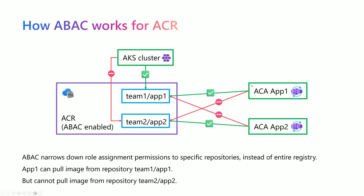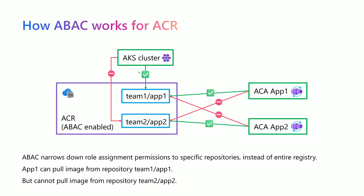So with ABAC, if we set an Azure Container App, for example app1, to be able to access the repository for team1/app1 and only that, then it cannot access the team2/application2, because that's dedicated only for application number two. The same applies for an AKS cluster at the cluster level or even at the namespace level, where each namespace is managed by a different team and each team has its own set of Docker images within the ACR.